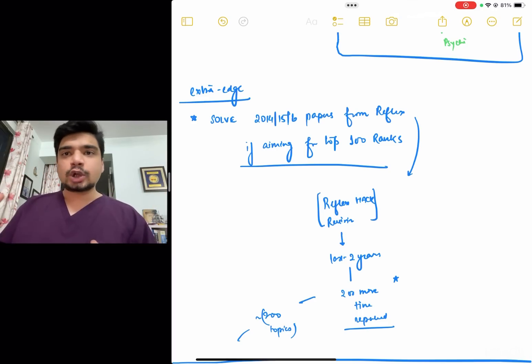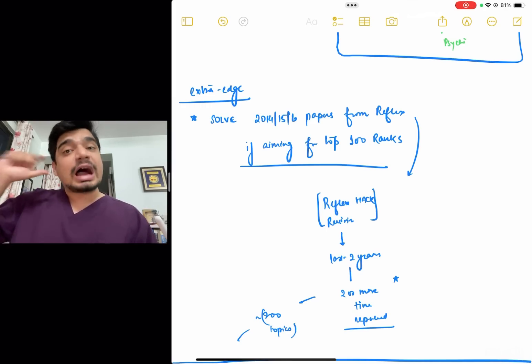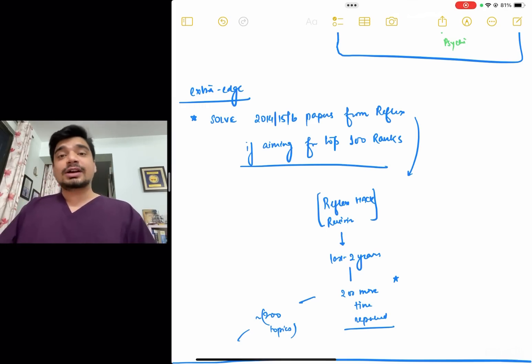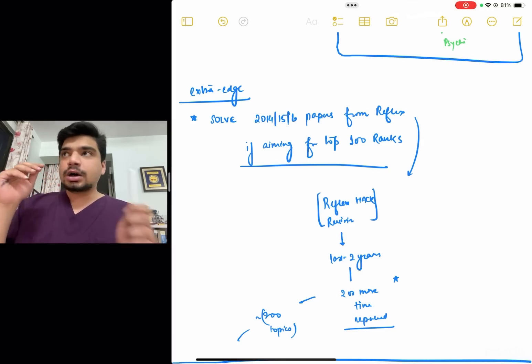So those are the ultra high yield topics. If you're someone who struggles especially with revision and making revision notes, that PDF can serve as a help you in the revision part. I'll just show you the PDF once. Just give me a moment.